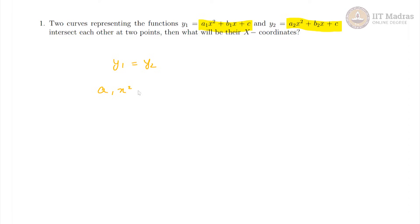So, a1x square plus b1x plus c should be equal to a2x square plus b2x plus c and the x is supposed to be same. So, anyway, we cancel off the c here.